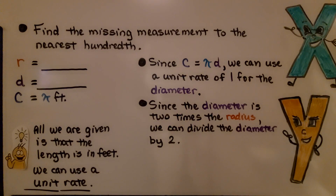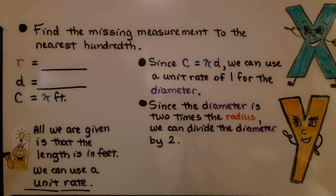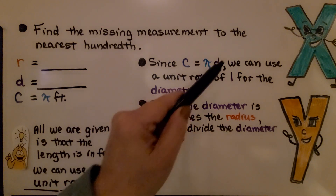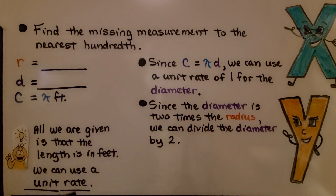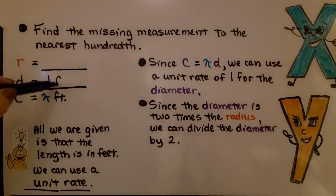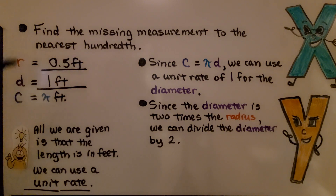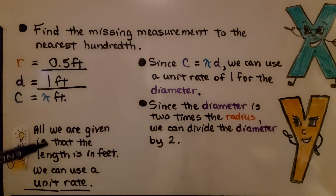Here we need to find the missing measurement to the nearest hundredth. We're only given that the circumference equals pi times some number of feet — no radius or diameter given. We can use a unit rate: since C equals πd, we set the diameter equal to 1. That gives a diameter of 1 foot. Since the diameter is 2 times the radius, we divide 1 by 2 to get 0.5 feet for the radius — because 2 radii equal 1 diameter.